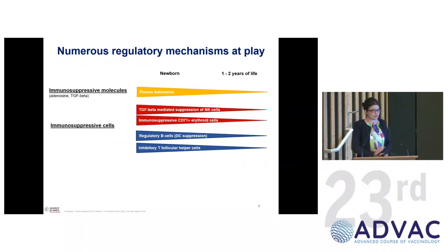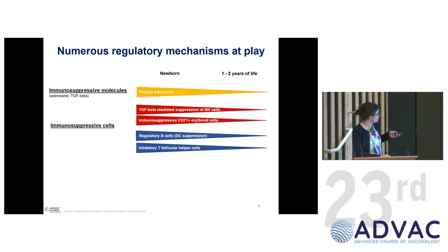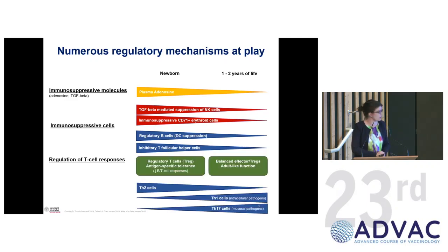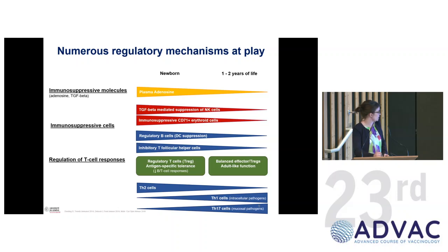Looking at these regulatory mechanisms, you see the phase of the newborn and then the phase between one and two years of life. There are immunosuppressive molecules that decrease over time, and immunosuppressive cells such as regulatory B cells and inhibitory follicular helper cell responses. There is a lot at the beginning, and it decreases over time. There is also a huge regulation of T cell responses — at first, many regulatory T cells, then with time a more adult-like balance of effector and T-reg cells.